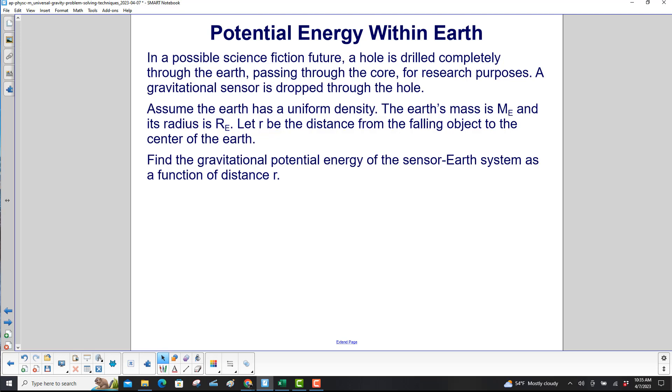Assume the Earth has a uniform density. The Earth's mass is M_e and its radius is R_e. Let r be the distance from the falling object to the center of the Earth. Find the gravitational potential energy of the sensor-Earth system as a function of distance r.